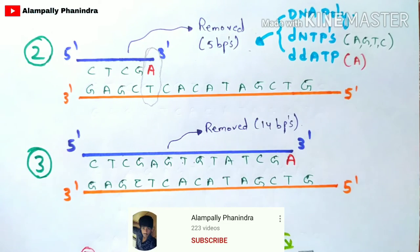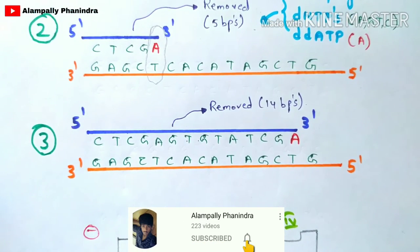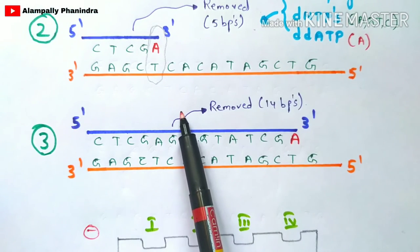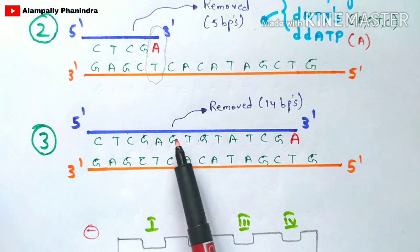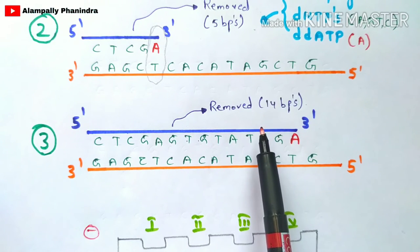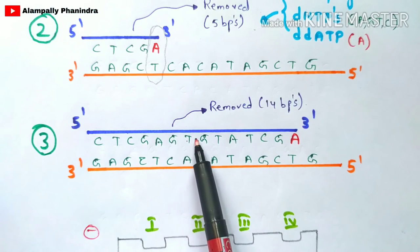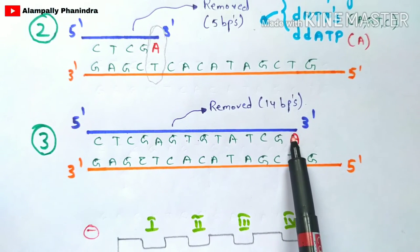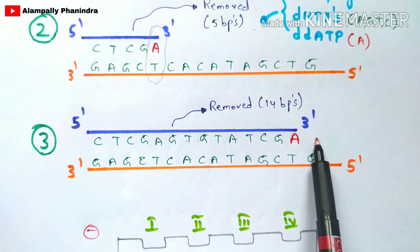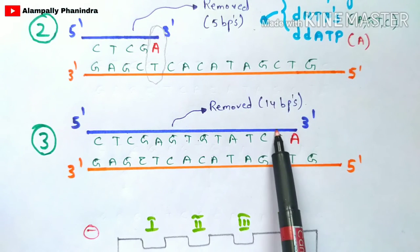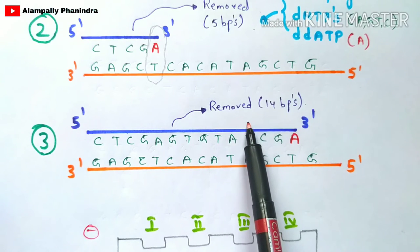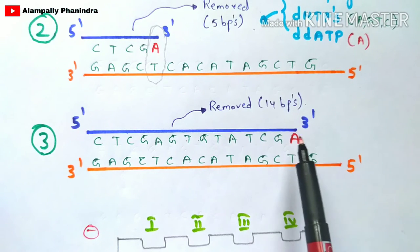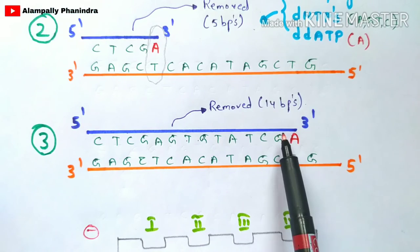The process repeats a third time. The primer is added, dNTPs and ddATP are present, and the DNA polymerase extends until ddATP is incorporated at a different position. All nucleotides up to that point are added, then the chain terminates again. This third primer is also removed. Since there are no more adenine-complementary positions remaining on the template, only three primers are produced in the first test tube.